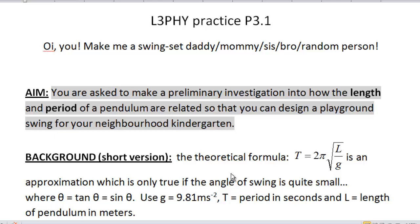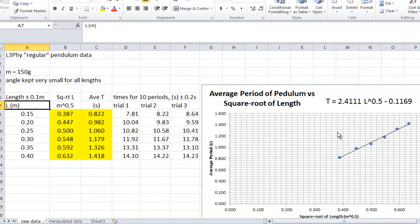Alright, here we go. How to do a merit-level graph for this level 3 physics experiment of a regular pendulum swinging back and forth, where you've already done your length and period data, you've already made your graph, you've already got your square root of L and your average T, and here we go.